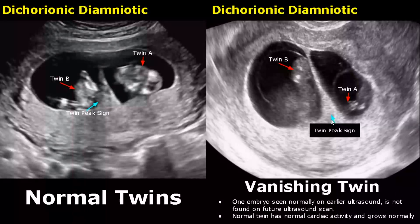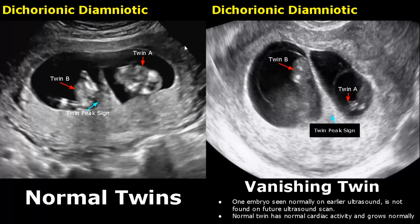In dichorionic-diamniotic twins, the fetus expected to be delivered first is the presenting fetus and is labelled twin A — it will be close to the cervix. The other twin is labelled twin B.